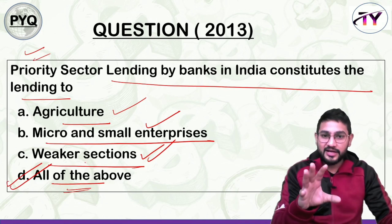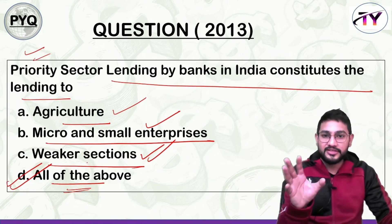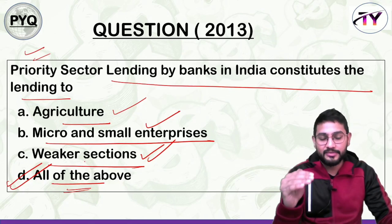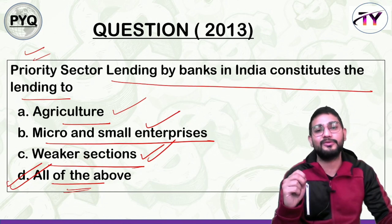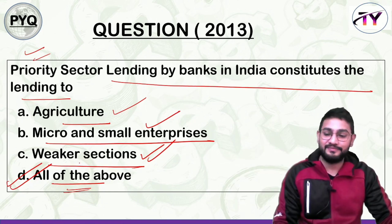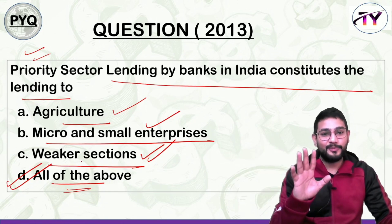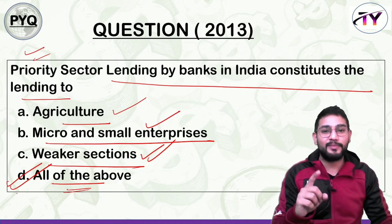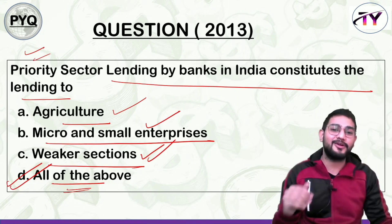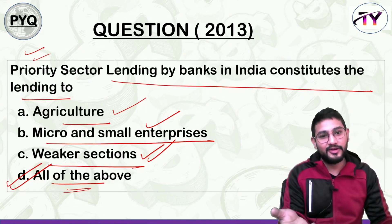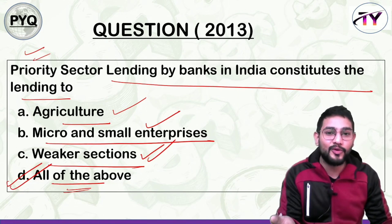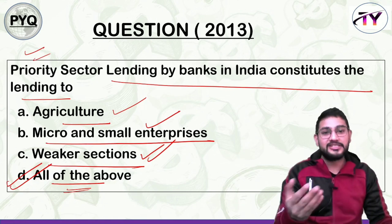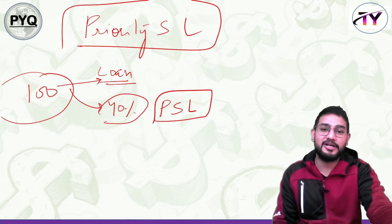The whole story's conclusion: if you understand the concept of why priority sector lending was created — to give loans to the weak who can't otherwise get them — then agriculture, MSME (micro and small), and weaker sections all logically fit. Even without memorizing facts, the concept alone gets you the answer. Please participate in the comments — without participation this series is a waste.